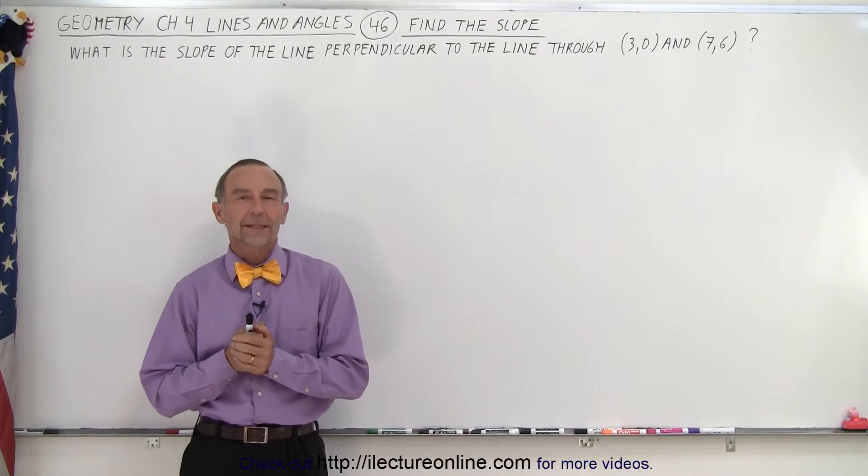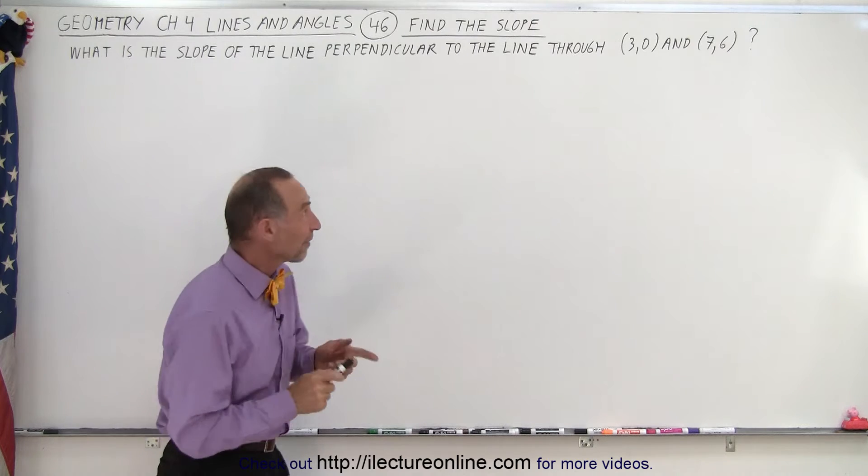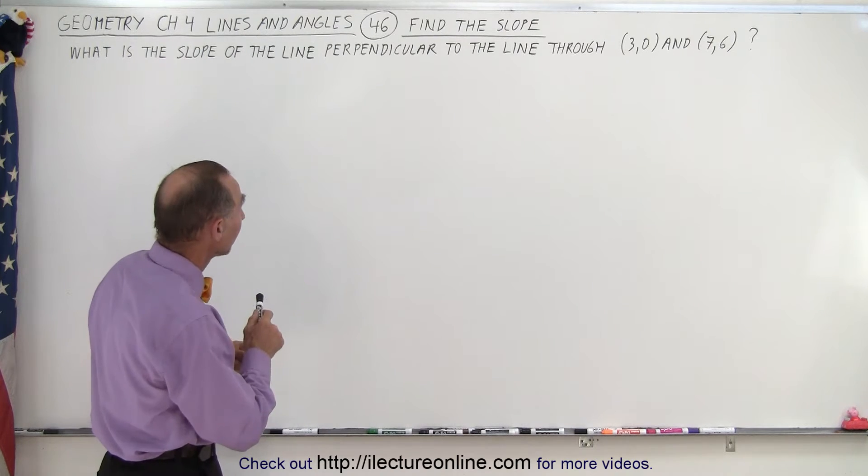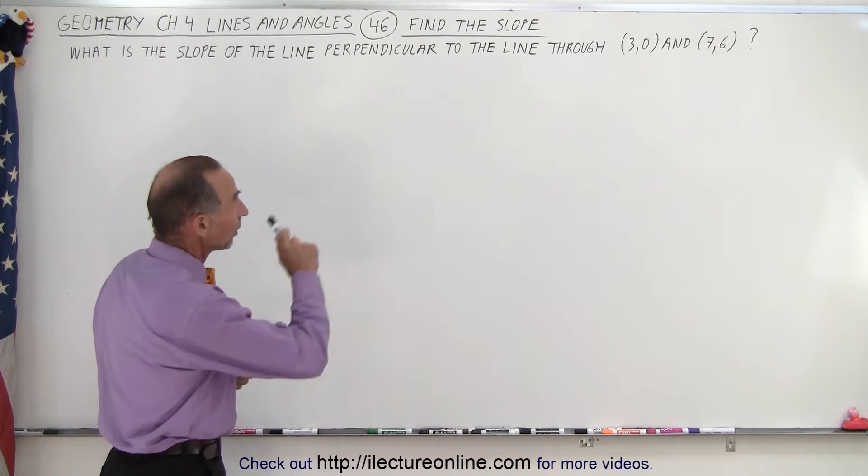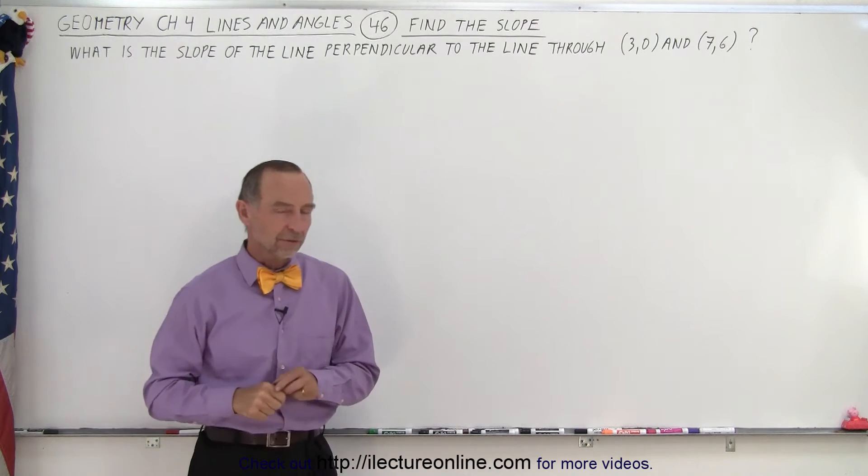Welcome to Electron Line. Now here for something slightly different. We're asked to find the slope of a line that is perpendicular to another line that goes through the points (3,0) and (7,6).